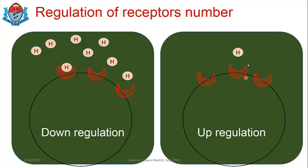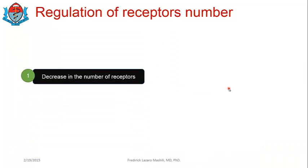In doing so, you increase responsiveness to that particular hormone, because you maximize the binding of this hormone — you increase the chances of this hormone to bind to a receptor because you have more receptors. So the chances for this hormone to bind to a receptor increases, and the chances for this hormone to bring about a biological response increases — you increase responsiveness.